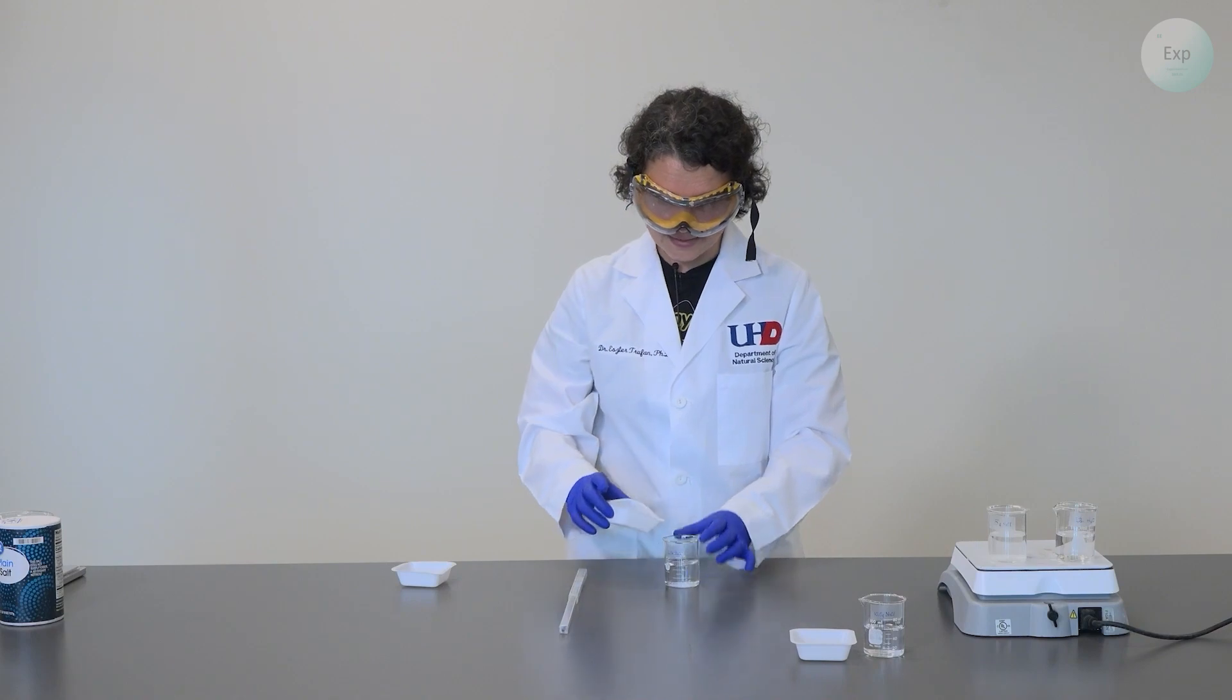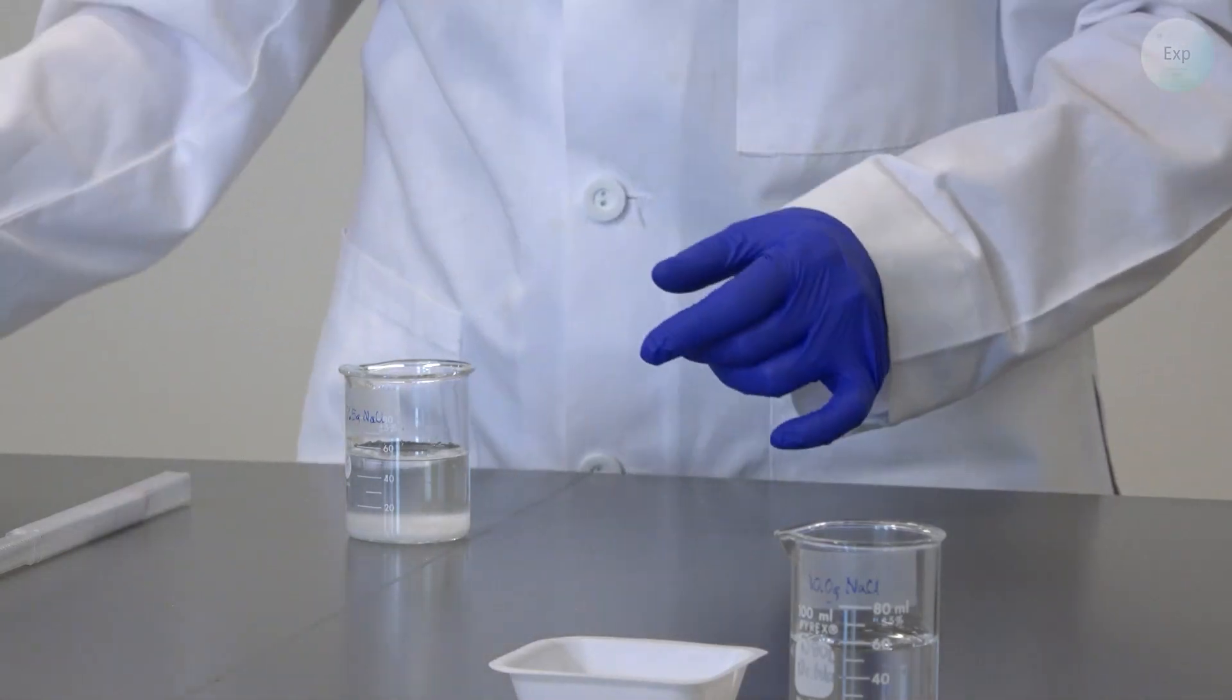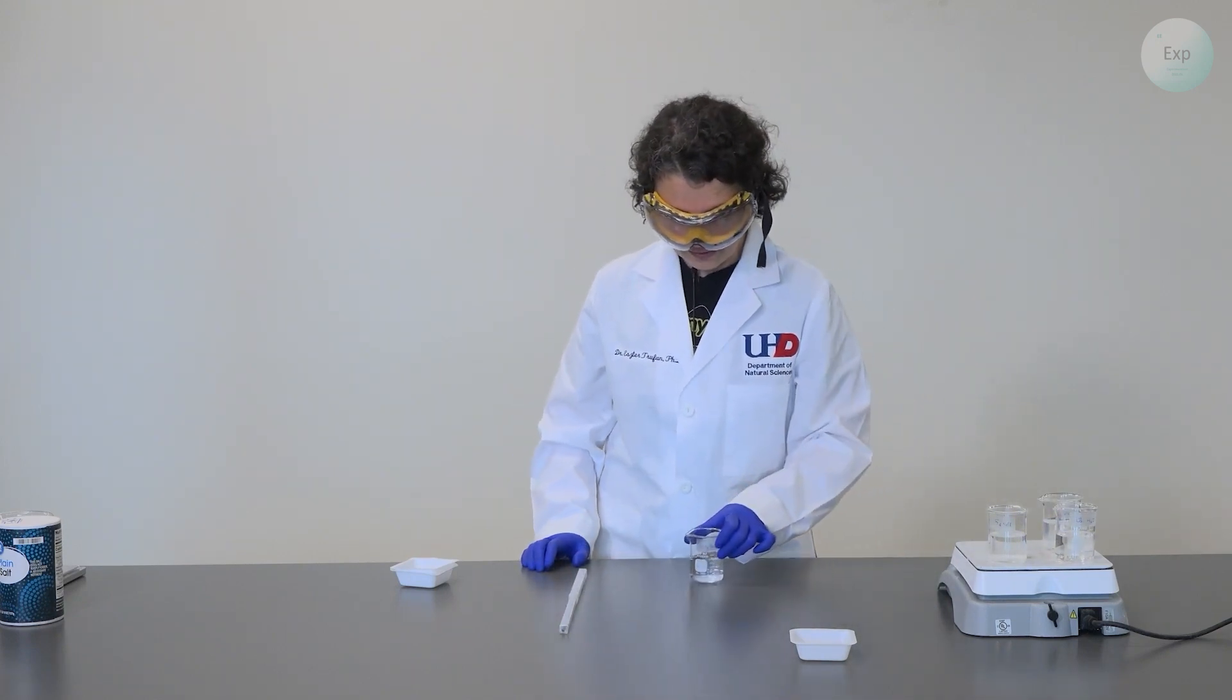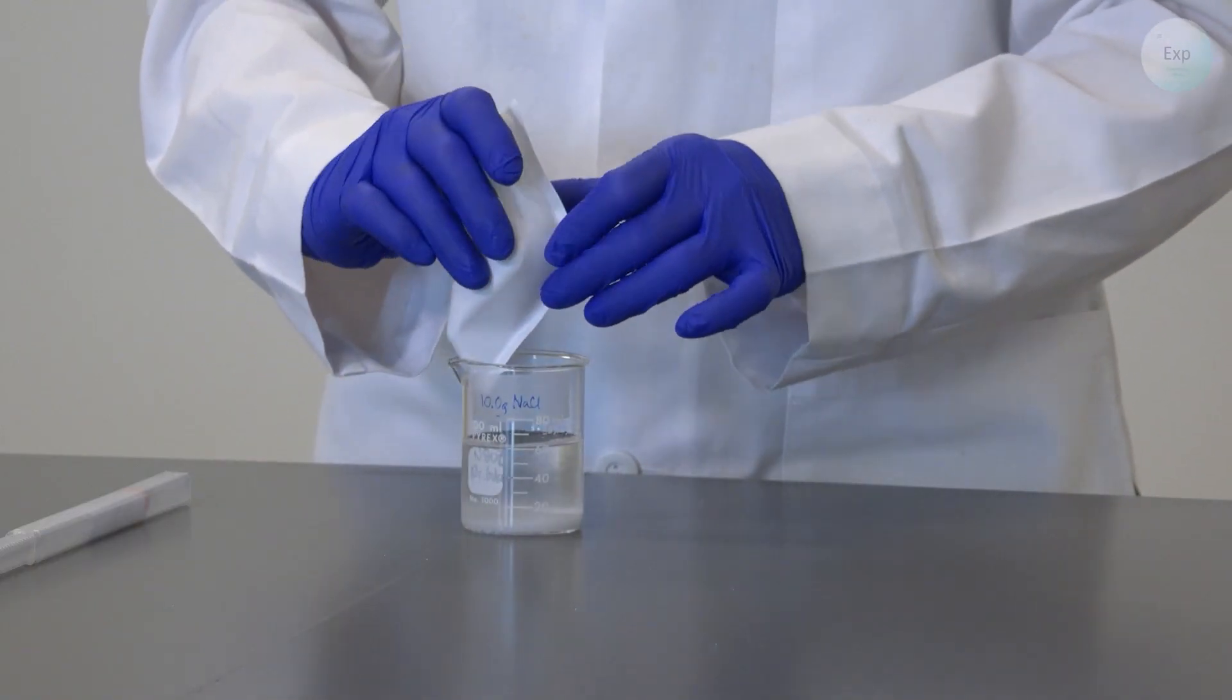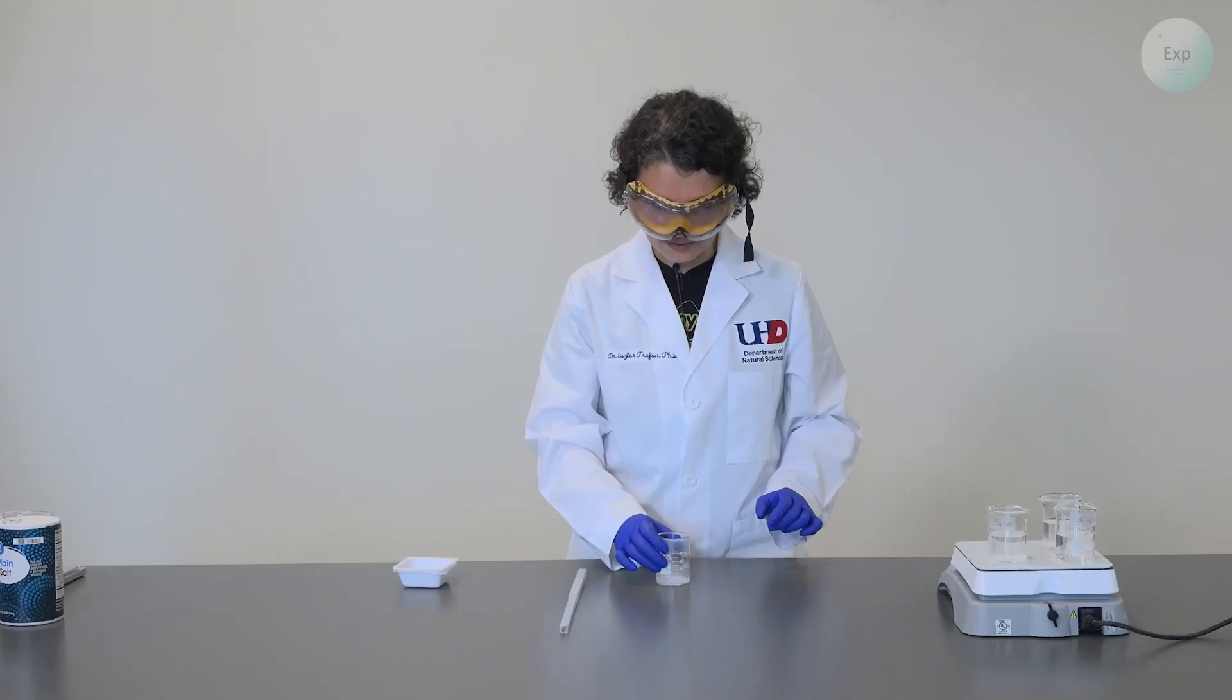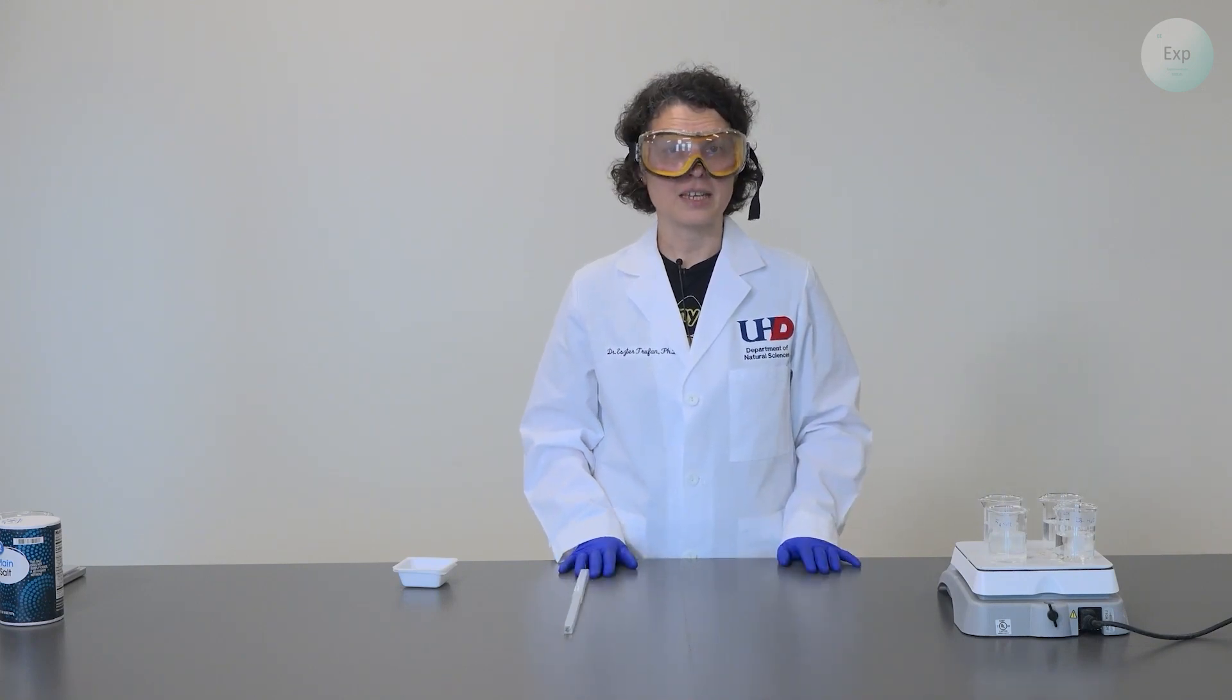Next, I will transfer my 7.5 grams of sodium chloride in my third beaker, set the weighing boat to the side, swirl the solution a little bit, and then transfer it onto the hot plate. Finally, I will combine my 10 grams of sodium chloride with the approximately 50 grams of deionized water. I will swirl this a little bit, careful not to cause any water to spill, place it on the hot plate, and then wait until it begins to boil.